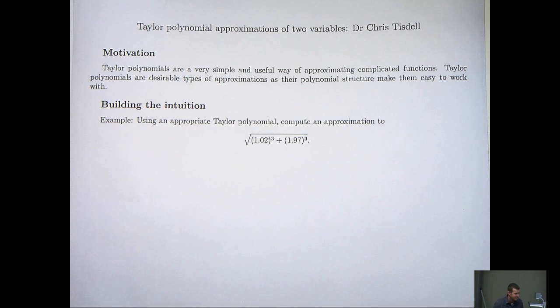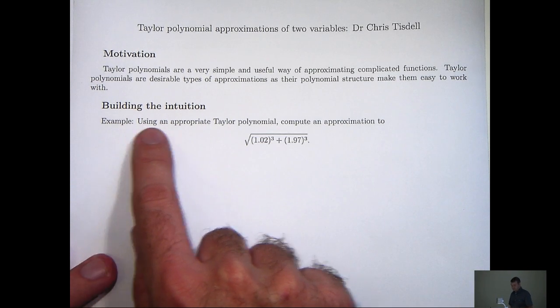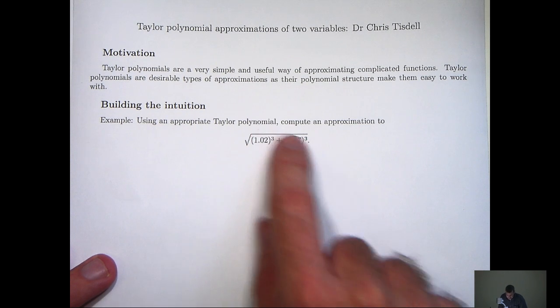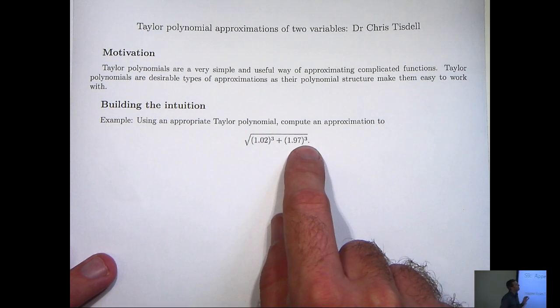So essentially, what we're doing is taking a very difficult function and approximating it by a simple polynomial. But let's see how this can be done. Let's build our intuition a little bit. Have a look at the following example. Using an appropriate Taylor polynomial, compute an approximation to this value here.